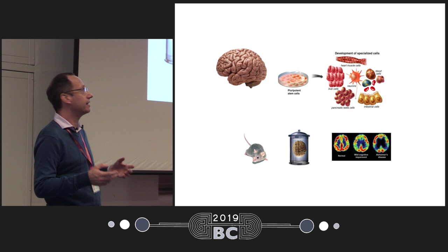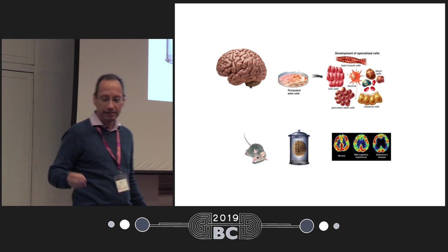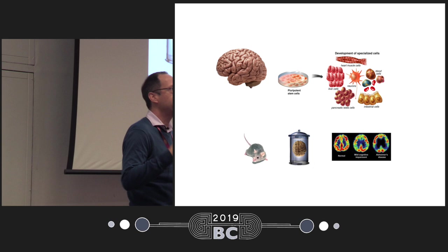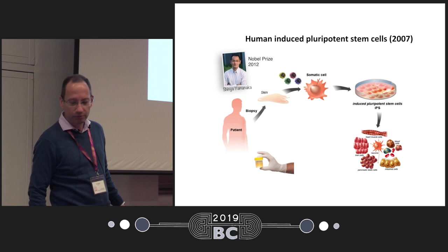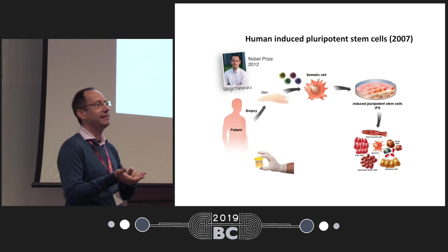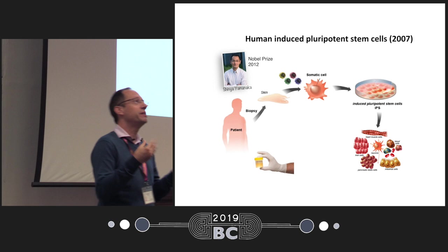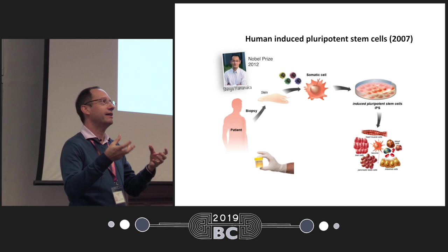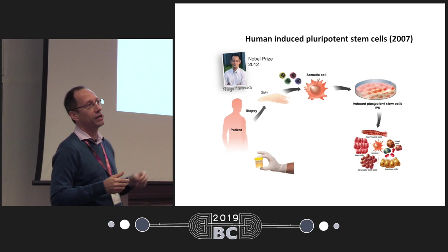Besides that, there is another way to work with the human brain, and this is based on stem cells. There are some kinds of stem cells called pluripotent stem cells, and these cells can give rise to any cell type of the body, including brain cells. A technique was developed by Shinya Yamanaka in 2007, in which you can take a piece of skin — a very ordinary cell like a fibroblast — and make that cell become a pluripotent stem cell, essentially like an embryonic stem cell from the same individual — like going back in time. Because of that, he won the Nobel Prize in 2012.